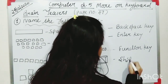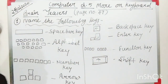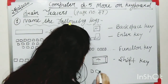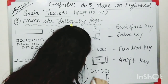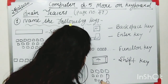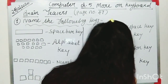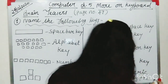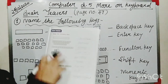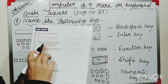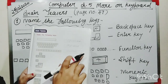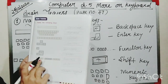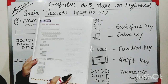Eighth is Shift key. And the last one is Numeric key pad. So to summarize: first is Space Bar key, second is Alphabet key, third is Number key, fourth is Arrow key, fifth is Backspace key, sixth is Enter key, seventh is Function key, eighth is Shift key, and last is Numeric key pad.